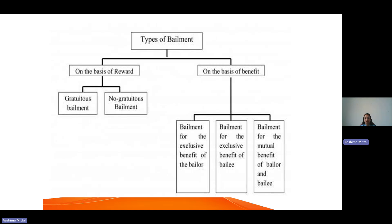In this transaction, A is delivering a car to his friend for a purpose — the purpose being going to Chandigarh. When the friend comes back, the car will be returned to A. This is a contract of gratuitous bailment, because A is delivering the goods for free without any reward or compensation. There is no reward or compensation for A in return.